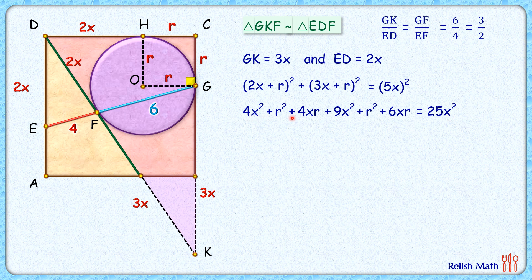So we have 25x² minus 4x² minus 9x² gives me 12x², then r² plus r² goes to the other side giving minus 2r², and minus 10xr. Let's first divide the equation by 2, so we'll get 6x² minus 5xr minus r² equals 0.